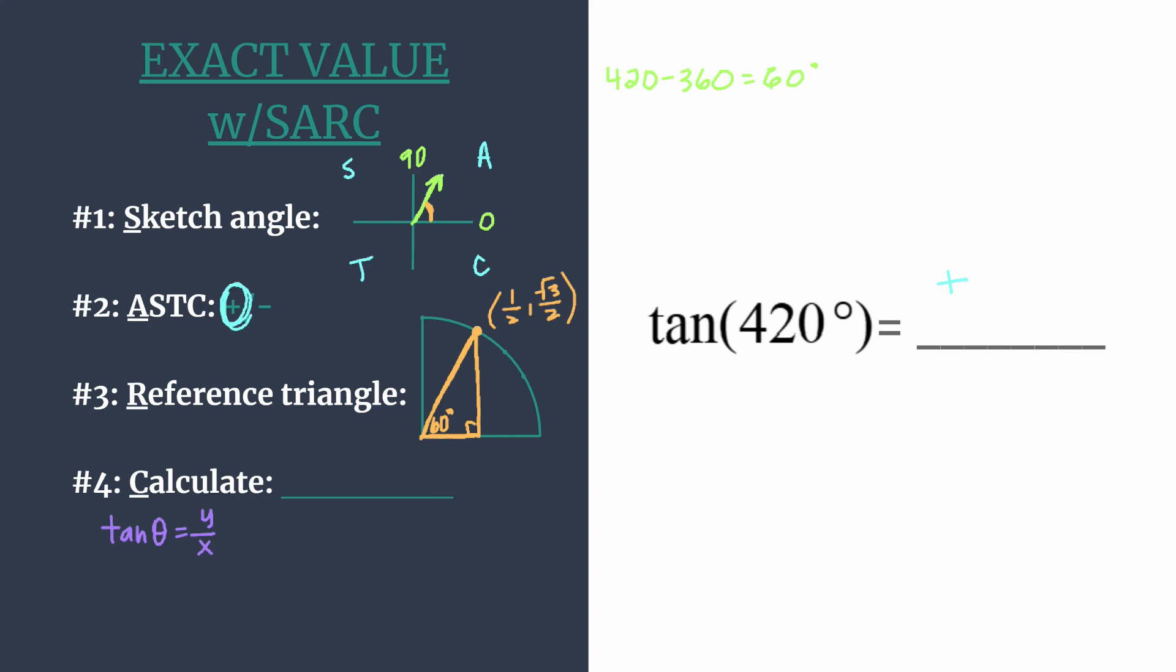Okay so we take our y coordinate, square root of 3 over 2, and if we're dividing by x, we're dividing by 1 half, and that means we want to just multiply by the reciprocal. So write that as 2 over 1. We see we can cross cancel those 2s, they have a common factor of 2 and thus reduce to 1s. And we know that our value is square root of 3, we remember from step 2 that it's positive, and so we know that the tangent of 420 degrees must be the square root of 3.